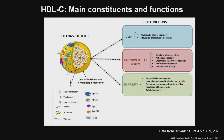HDL cholesterol is actually a very complex molecule as shown in this cartoon. It has both apoproteins as well as lipids. The major apolipoprotein is apolipoprotein A1, but it also carries ApoA2, ApoE, ApoC3, as well as an enzyme called paraoxonase which has antioxidant properties. The lipids it carries include cholesterol esters, triglycerides, and free cholesterol. In addition, it can carry hormones and vitamins in the bloodstream.